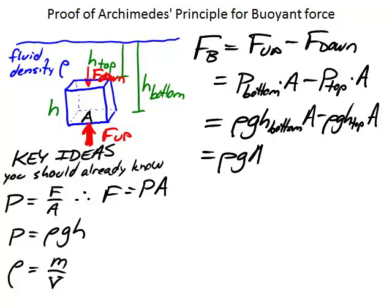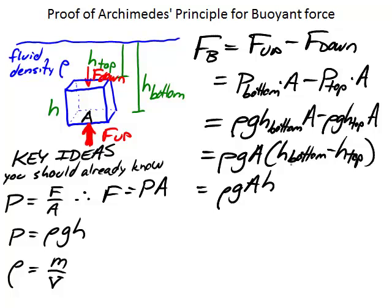We can factor out rho*g*A, giving us rho*g*A times (h-bottom minus h-top). But what is h-bottom minus h-top? Here's h-bottom, here's h-top — the difference between those two is H, the height of the box itself. So we can rewrite this as rho*g*A*H. Now we have the area of the base of the box times the height of the box, which equals the volume of the box. So the buoyant force equals rho times g times the volume of the box — the volume of the fluid displaced by the box.